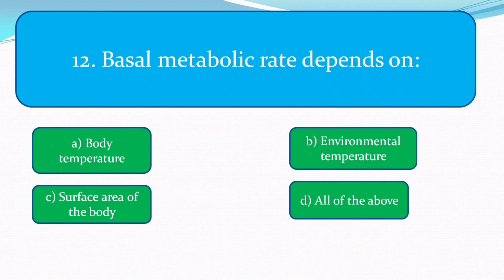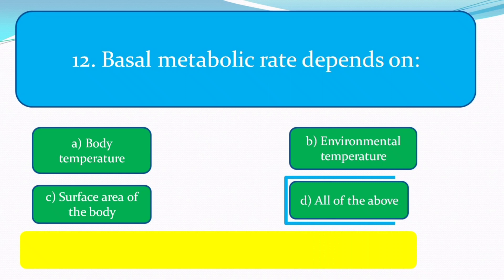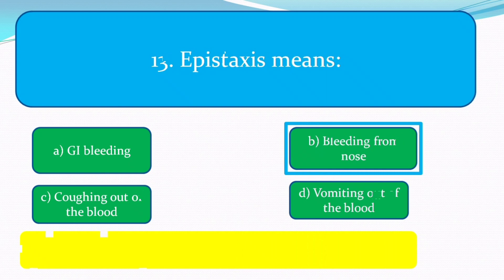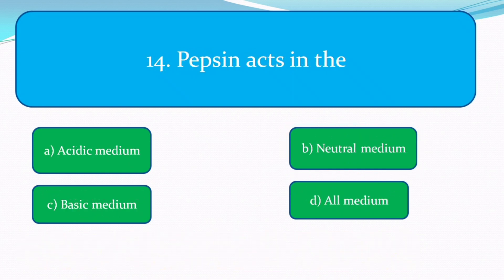Basal metabolic rate depends on body temperature, environmental temperature, and surface area of the body. The correct answer is all of the above. Epistaxis means bleeding from the nose.